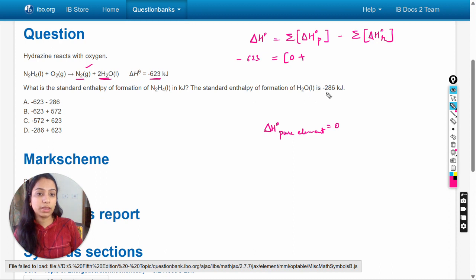So here 0, plus for water molecules we will write the enthalpy of formation for water, but multiplying it with its coefficient, that is 2 multiply by -286.